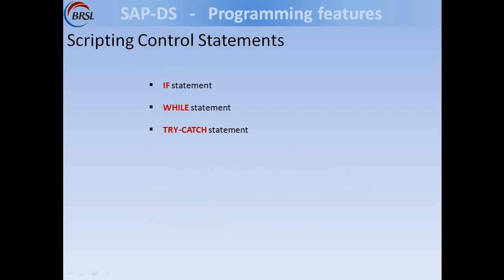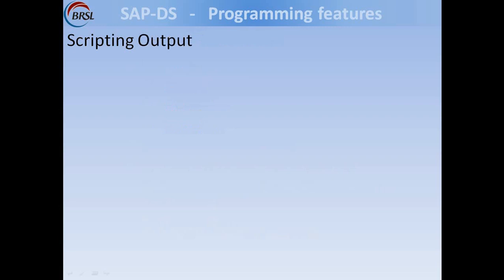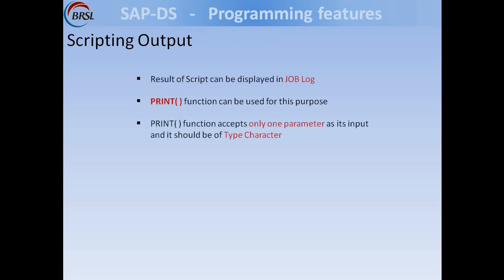Scripting supports three control statements: the if statement for implementing true/false logic, the while statement for implementing looping logic, and the try-catch statement for exception handling. Output generated from scripting will be displayed in the job log. Output can be generated with the print function, which accepts only one parameter of type character. If you want to display the value of a variable through print, it should be converted to character type. String interpolation is better than using conversion functions or concatenation operators for combining multiple variable values to display through print.